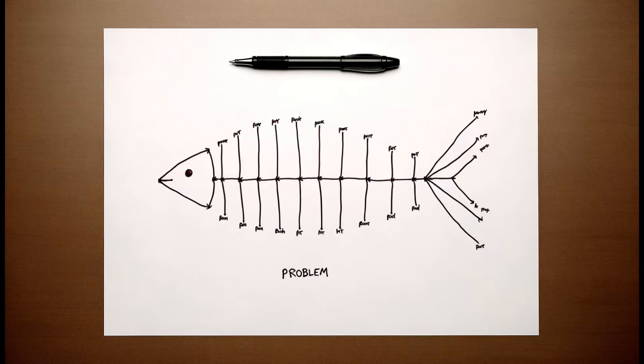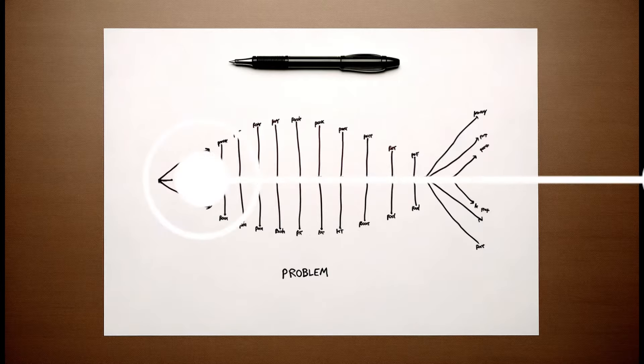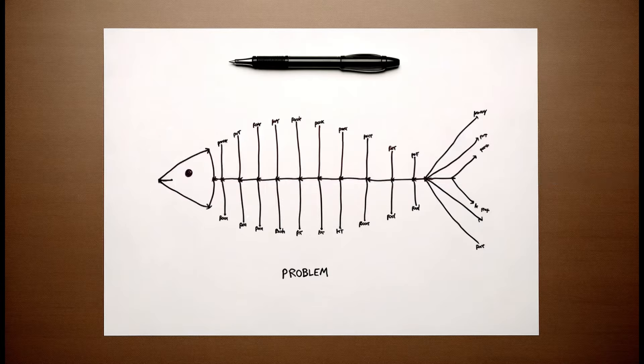Begin by sketching a horizontal line that spans your paper, symbolizing the backbone of the fish, with your specific problem located at the head of the fishbone. Next, consider the key categories or factors that could be contributing to your problem — these are the bones that radiate from the spine.